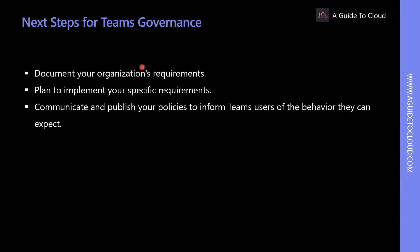Once you have identified your Teams governance topics, you should consider the following steps to develop a governance roadmap for your Teams rollout project: document your organizational requirements, plan to implement your specific requirements, and communicate and publish your policies to inform your Teams users and the behavior they can expect.